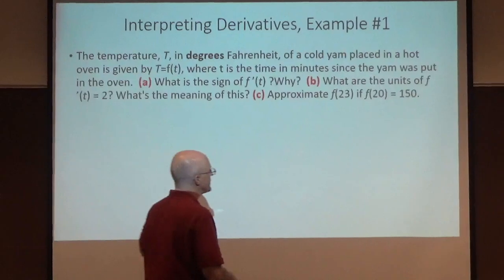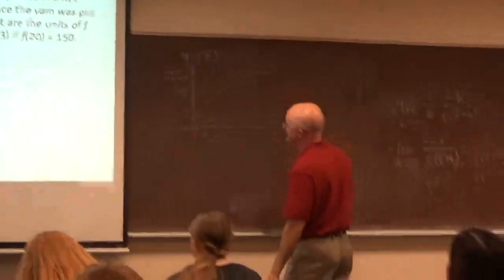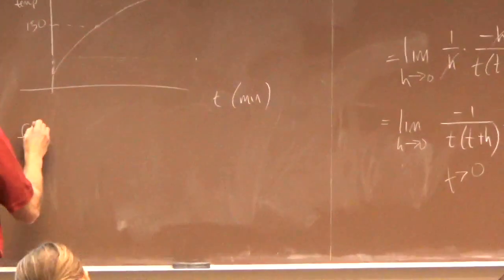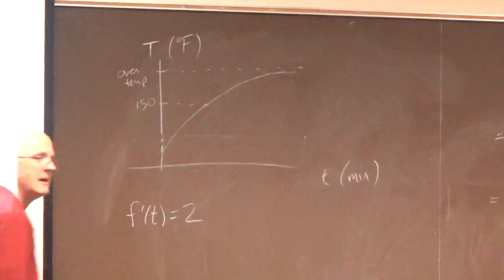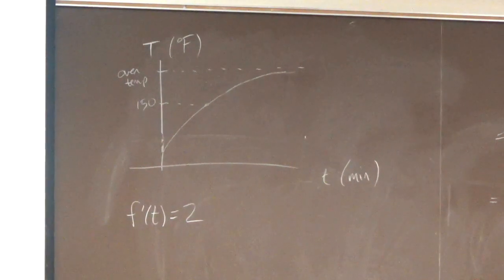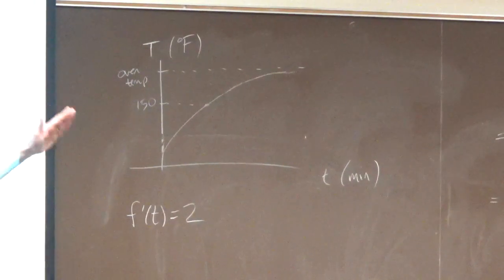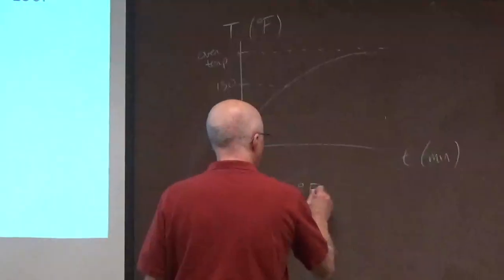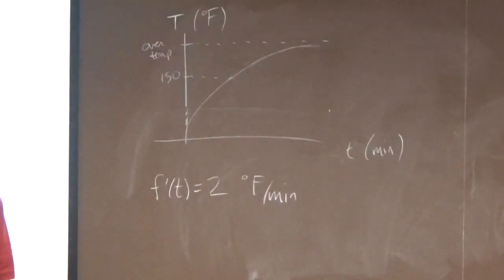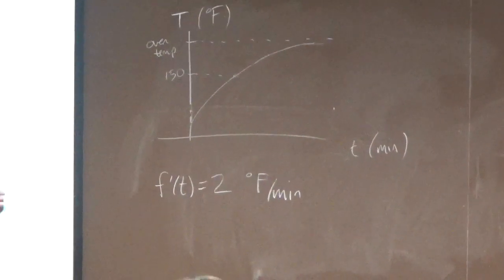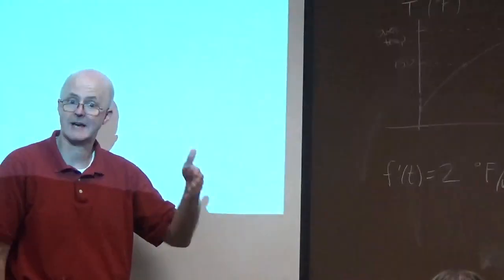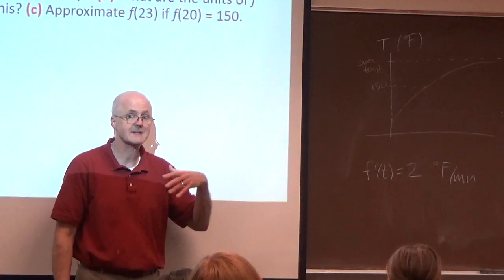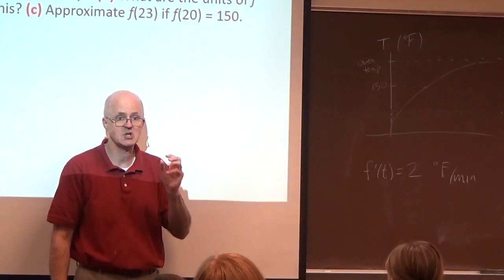What are the units of f prime equaling two? Time was in minutes. It's a rate of change. A slope. As with all slopes, then, its units have to be the units on the vertical axis per unit of the horizontal axis. Degrees Fahrenheit per minute. That should make sense. At some time, if the derivative is two, that means at that moment in time, the yam is heating up at this rate. Two degrees Fahrenheit every minute. So if you leave it in there an extra minute, it's going to be two degrees warmer. You leave it in there an extra two minutes, it'll be about four degrees warmer. An extra three minutes, it's about six degrees warmer. Is that a perfect approximation? No. It is an approximation.